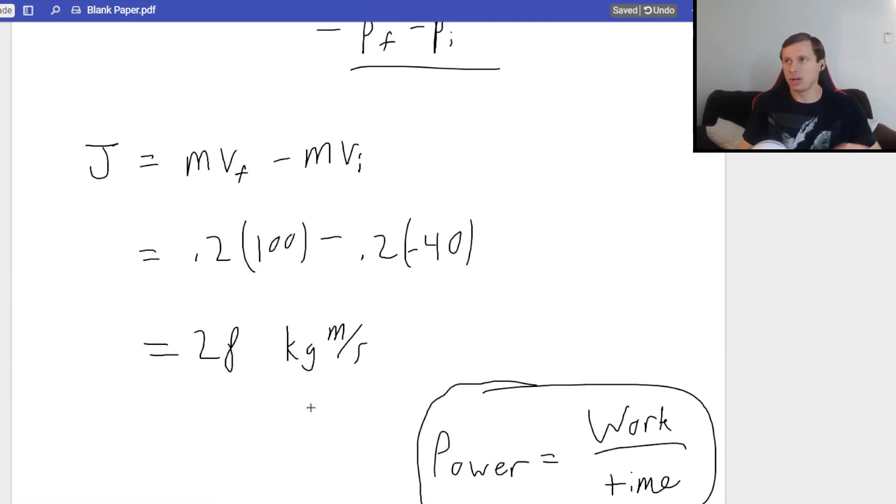28 is the correct answer. Remember when I said be very, very careful with positives and negatives for momentum? This is why. This is exactly why. And that's the answer to this question. I have one more. I said this was part A. There is going to be a part B.